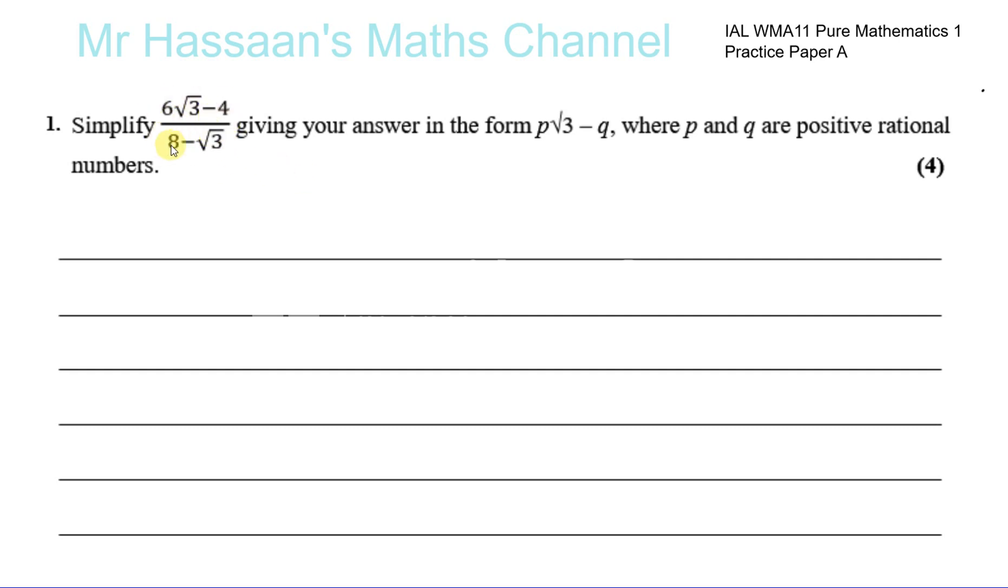So we've got to take this fraction 6√3 minus 4 divided by 8 minus √3 and we've got to simplify it and give it in the form mentioned P√3 minus Q. So what we need to do is rationalize the denominator here.